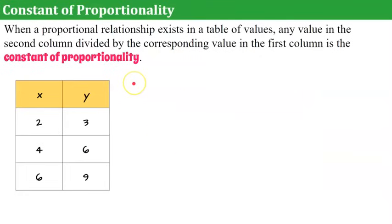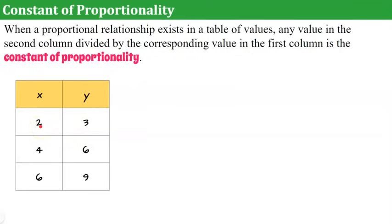Now let's talk about the constant of proportionality. When a proportional relationship exists in a table of values, any value in the second column divided by the corresponding value in the first column is the constant of proportionality. So the constant of proportionality is a ratio of y over x — the second column over the first column. Looking at the first entry, that's 3 over 2, which is the same factor I used when multiplying.